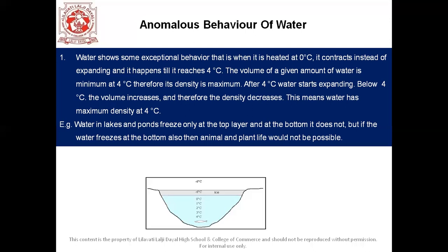Ice is a bad conductor of heat, which is why the layer of ice at the surface does not allow the transfer of heat from the water to the atmosphere. As the water below the layer of ice remains at four degrees Celsius, fish and other aquatic animals and plants can survive in it. An example of anomalous behavior of water is that water in lakes and ponds freezes only at the top layer, not at the bottom. If the water froze at the bottom also, animal and plant life would not be possible. You can see the anomalous behavior of water in the diagram given below.